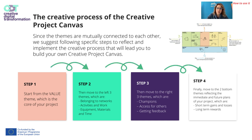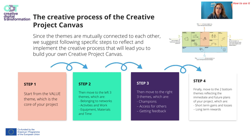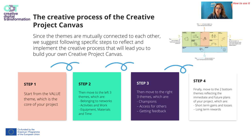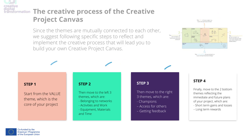Start from the value theme, which is the core of your project, then move to the left three themes: belonging to networks, activities and work, and equipment, materials and time. Then move to the right three themes: champions, access for others, and getting feedback. Finally, move to the two bottom themes reflecting the immediate and future plans of your project, which are short-term gains and losses, and long-term rewards.